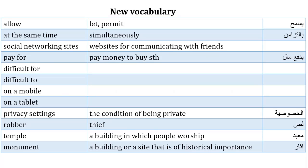Privacy settings: كلمة privacy لها نطقان - بريطاني: privacy، وأمريكي: privacy. Privacy settings هي إعدادات الخصوصية. طبعاً بتشوفوها لما بتدخلوا أي موقع من مواقع التواصل الاجتماعي.